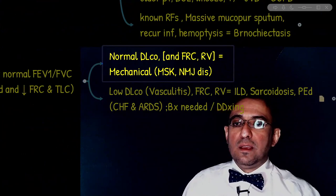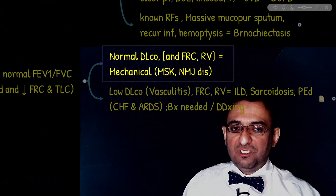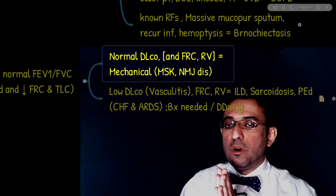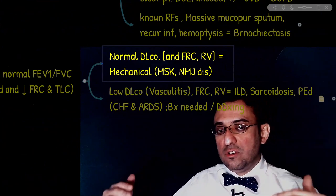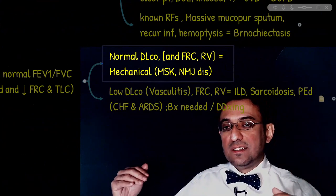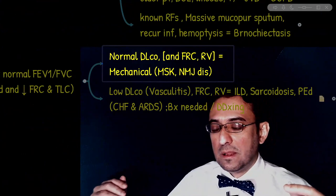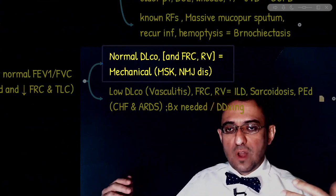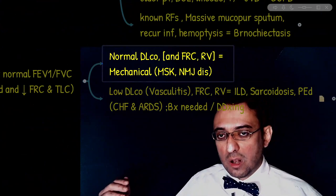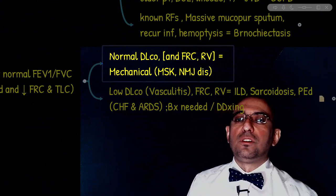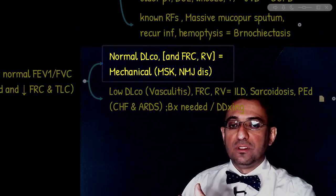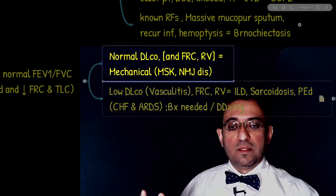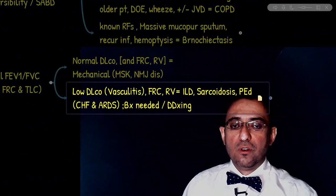In the non-interstitial type, it's possible that residual volume is also normal. This is why we said all volumes are reduced in restrictive lung diseases in the majority — not all — of cases. It is possible to have a restrictive lung disease with normal residual volume in the non-interstitial subtype due to chest wall deformities or musculoskeletal/neuromuscular junction disorders. These are the ones with normal DLCO, while low DLCO indicates interstitial lung diseases.